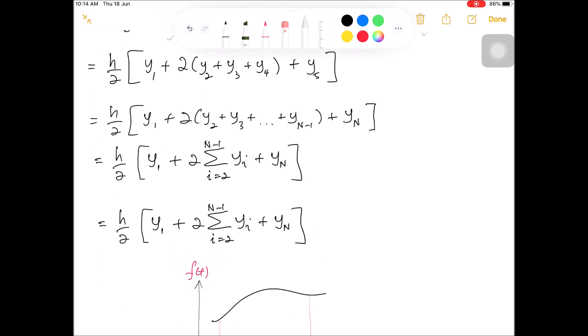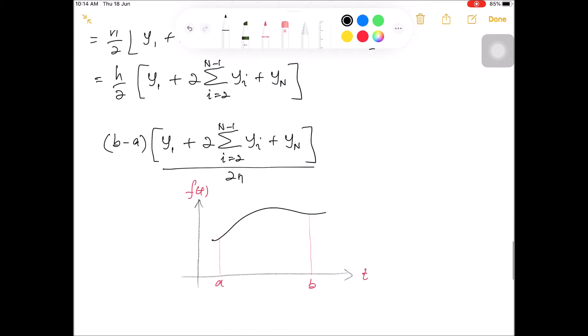So substituting back the expression for H, equals to B minus A over N. So if I write 2N down here, I can interpret the last expression as the width times the average height.